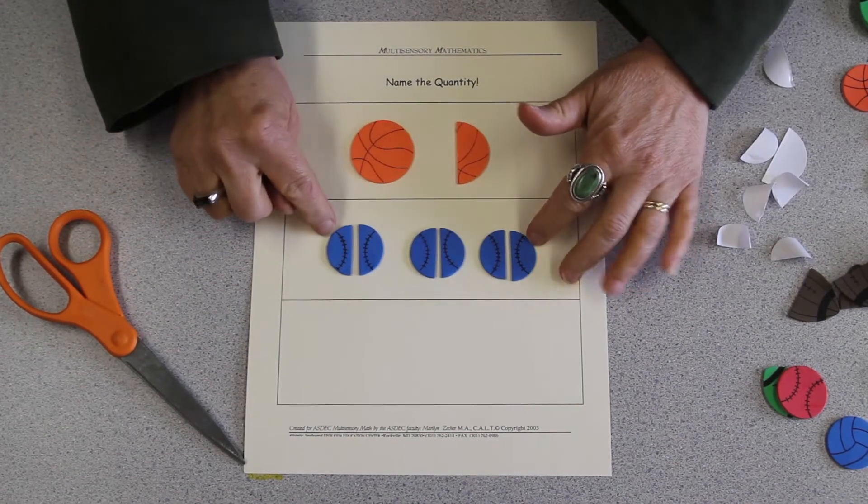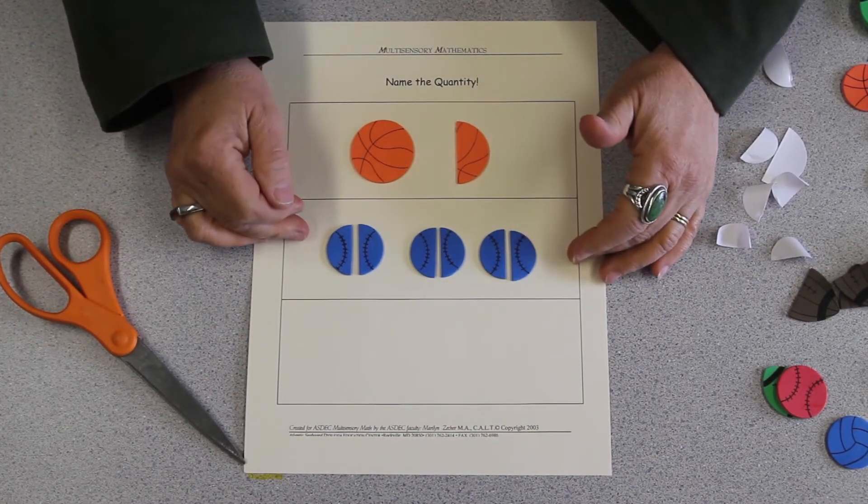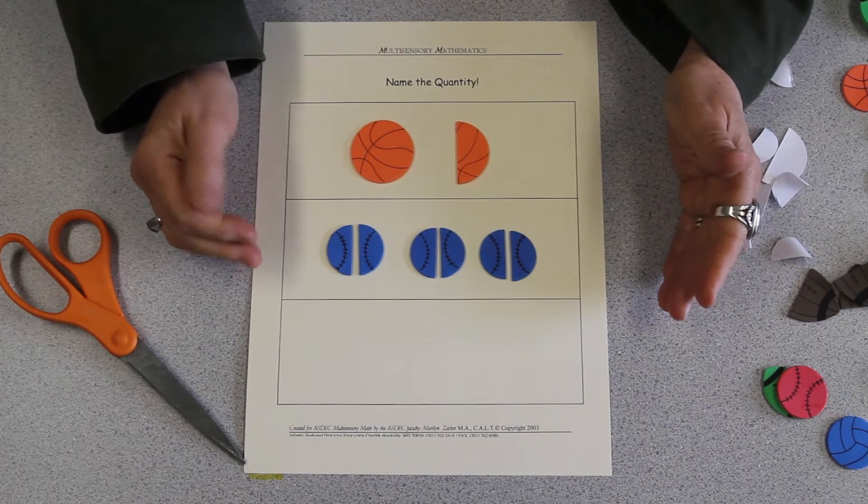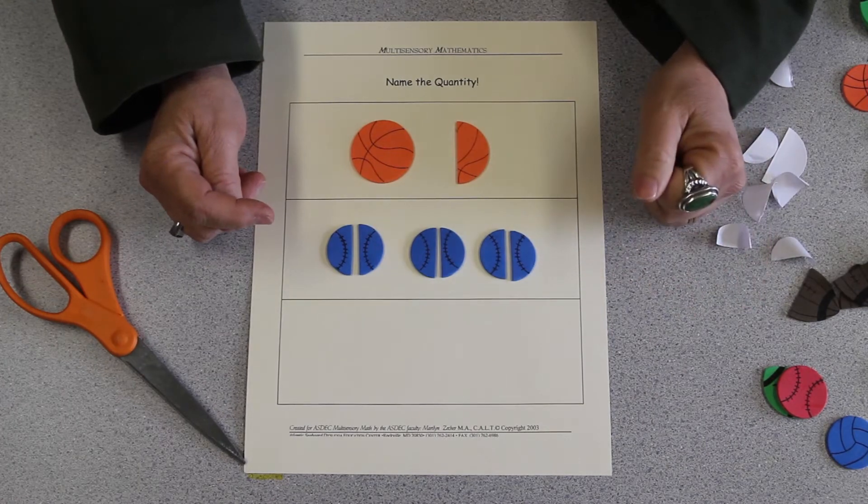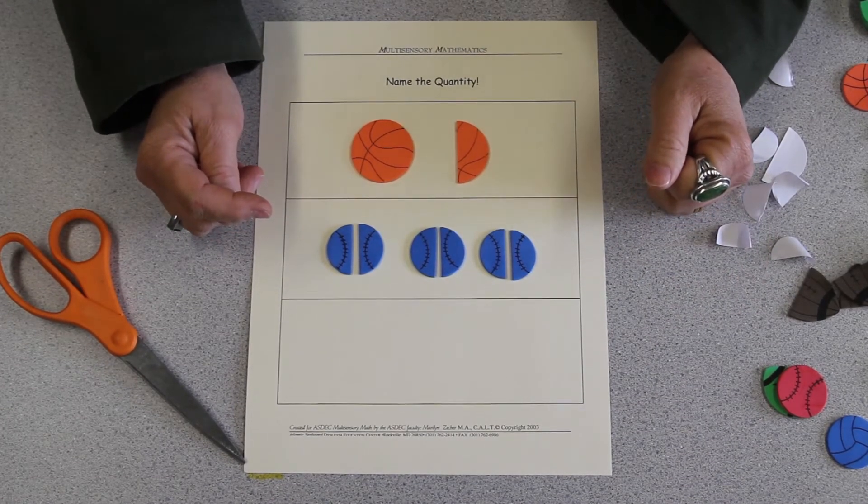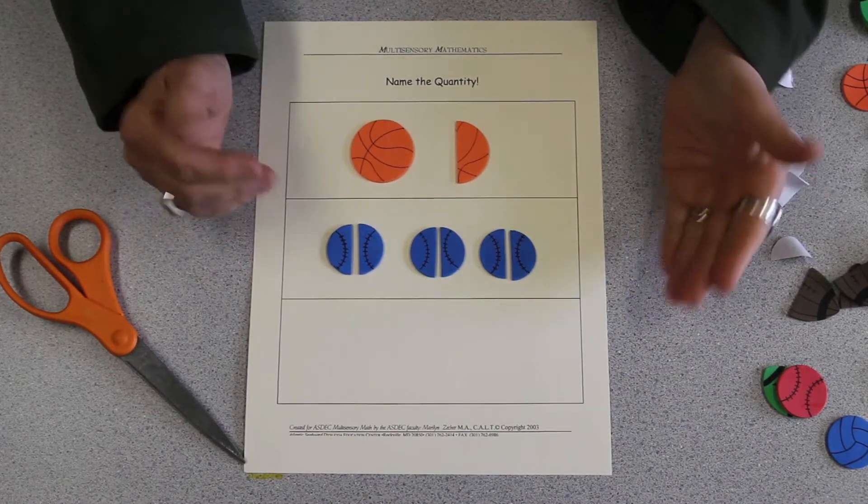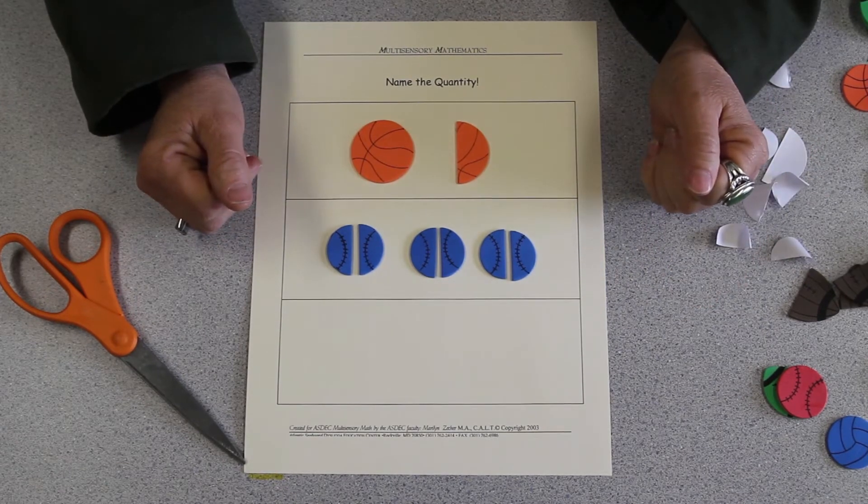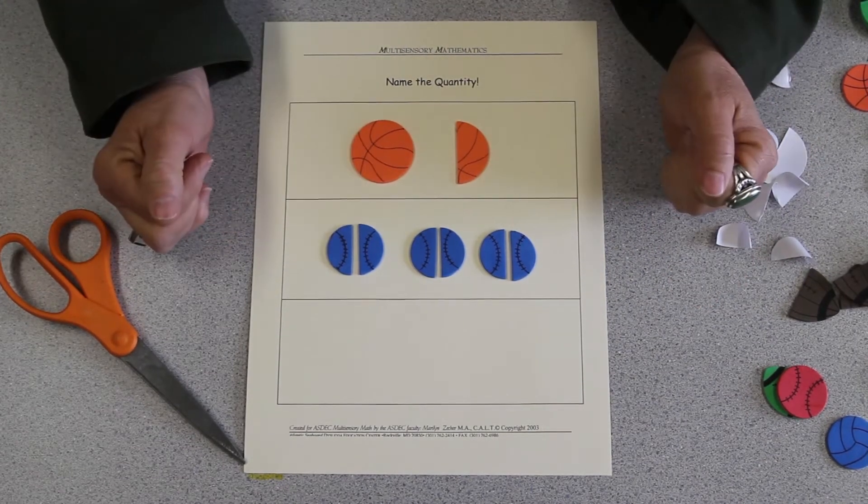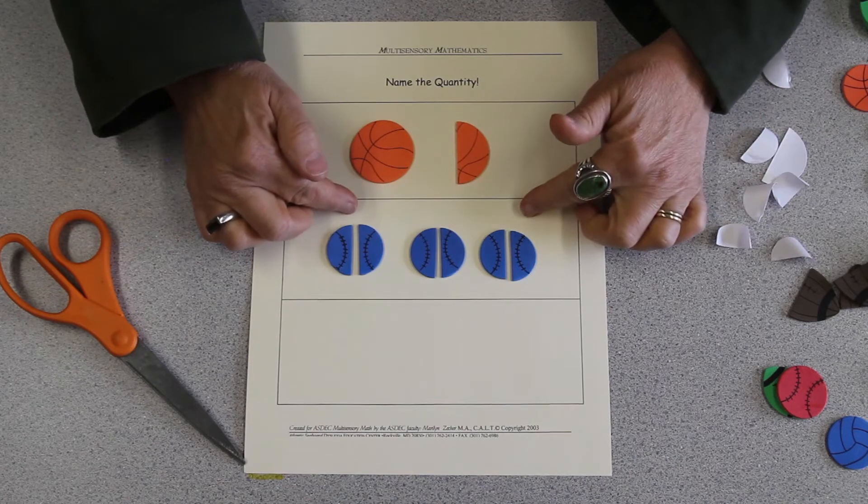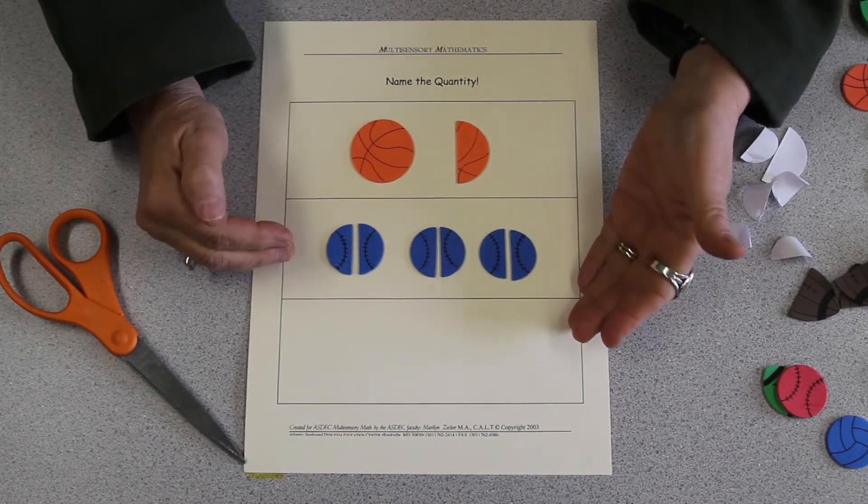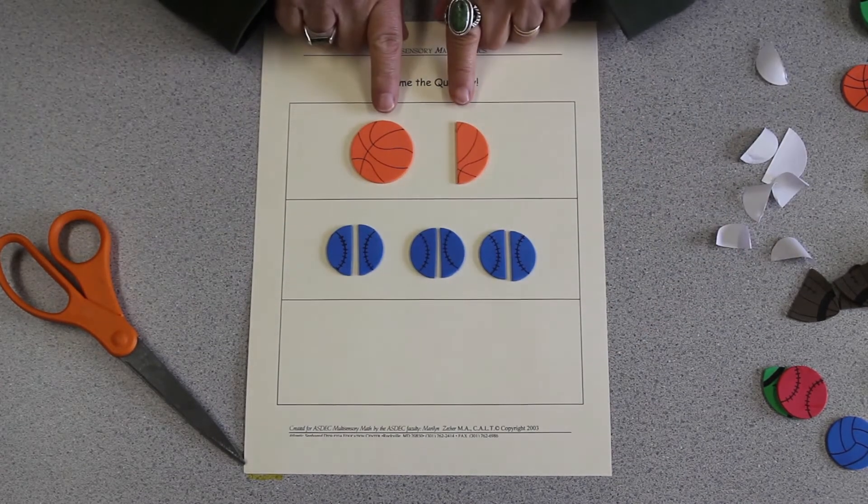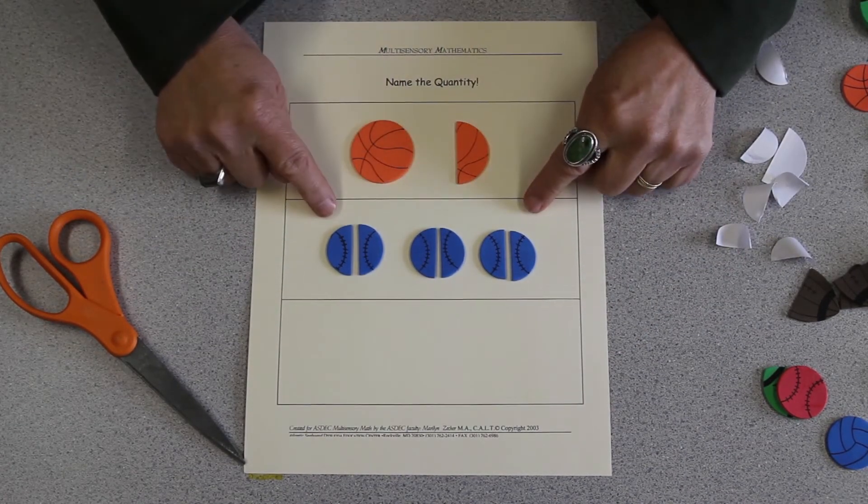That's the fraction as shown. But can I see another way to name that total quantity? How could I name that quantity in the fewest pieces possible? Well, I can actually see that the simplified form of this fraction is going to be three wholes. So thereby, having the student create his own sheet, he can begin to see the relationship between mixed numbers and improper fractions.